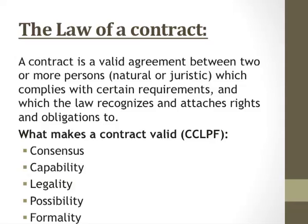What makes a contract valid? What makes a contract valid are five points, which I have termed CCLPF. Double C refers to consensus and capability. L refers to legality, P to possibility, and F to formality. That is what makes a contract valid. When you've drawn up a contract, you should have come to some sort of consensus about what you are agreeing to, the capabilities which go with it, the legality, the possibilities, and the necessary formalities that also need to take place when agreeing and signing a contract.